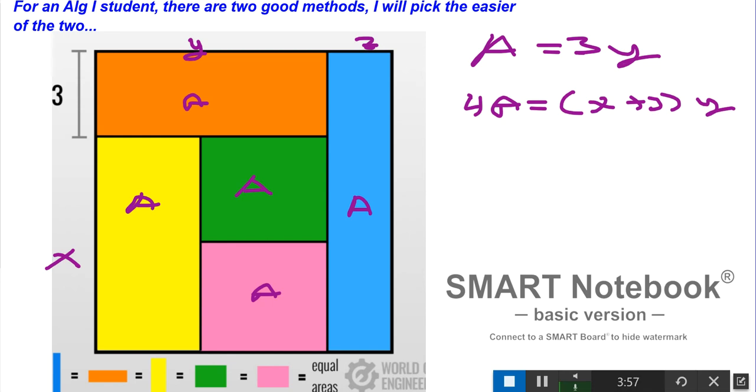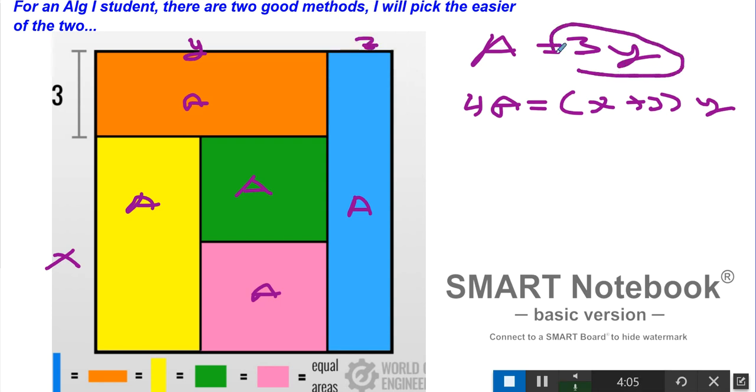What we have is 4A equals this, and A equals that. So if A equals 3y, we can substitute 3y in right here. This is solving by substitution. So we have 4 times 3y equals x plus 3 times y. I don't want to distribute that y, that just makes things harder. So I'm going to divide by y on both sides, which eliminates the y. So I have 12 equals x plus 3. Subtract 3, so 9 equals x.